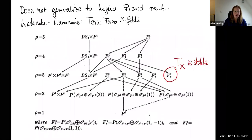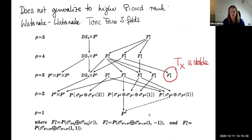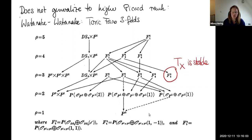One might wonder whether this is true in higher Picard rank, but that is not the case. Looking at toric Fano threefolds — Watanabe and Watanabe have a nice picture of all toric Fano threefolds and how they are related — thanks to William Reynolds, he computed all threefolds for which TX is stable. TX is stable for some toric Fano threefolds that do not admit a map to projective space, so in general for higher Picard rank the question is much more interesting.